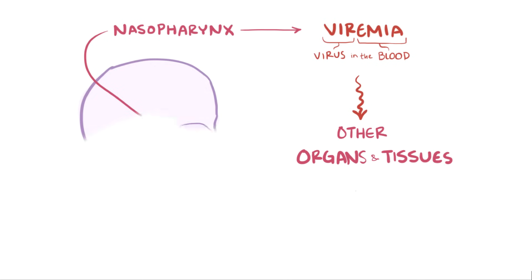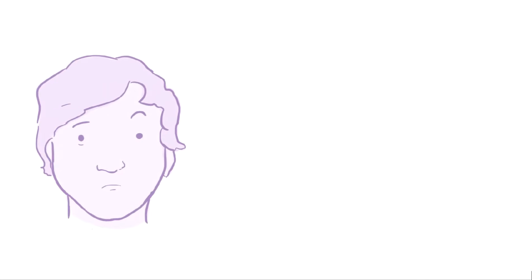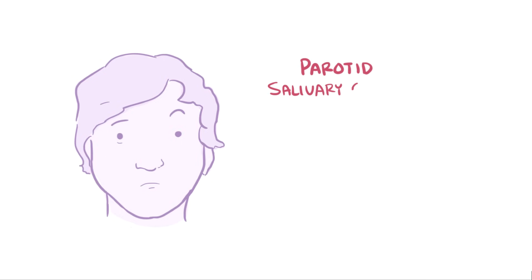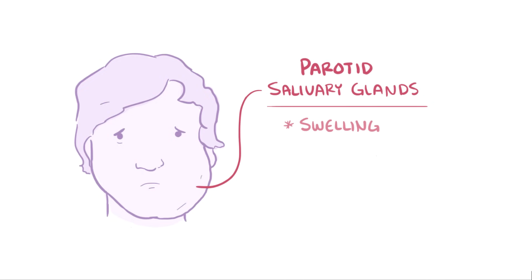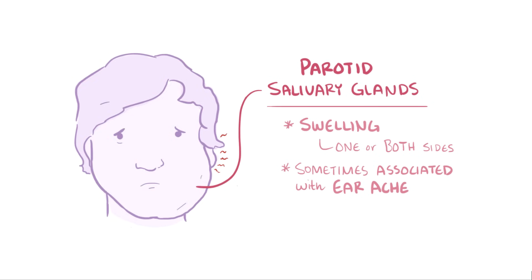The mumps virus has tropism, or preference for, the parotid salivary glands, and the most classic finding in mumps is swelling of those parotid salivary glands, either on one side or on both sides, sometimes with an associated earache. The swollen parotid gland lifts the earlobe up and out and obscures the angle of the jaw, and can sometimes cause trismus, which is spasm of the muscles of mastication or chewing.